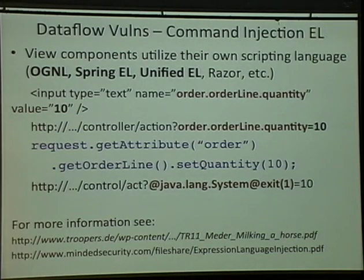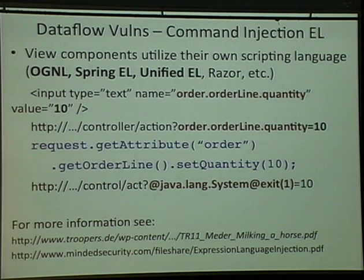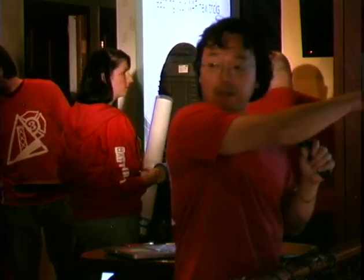Other frameworks besides .NET use other types of scripting languages called EL. Struts and Spring have EL. In older versions of Struts, they would take request parameters like order.orderline.quantity and evaluate that as an expression — translating into request.getAttributeOrder.getOrderLine.setQuantity equal to 10. Researchers figured out a way to execute arbitrary commands on the server using that same logic, using at-signs to call the exit method on the System class, causing a denial of service.